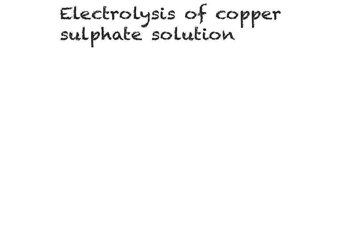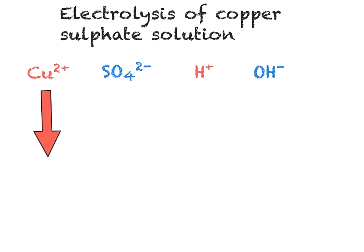In the electrolysis of copper sulfate solution, we have two different compounds: copper sulfate, CuSO₄, as well as water, H₂O. These two compounds under electrolysis will split into their respective ions. We will have Cu²⁺ as the cation from the copper sulfate, and SO₄²⁻ as the anion, the sulfate ion. From water we have the H⁺ ion and the OH⁻ ion. As copper is less reactive than hydrogen, it will be the copper that is evolved at the cathode. The copper ions will move towards the cathode to become copper solid. The half equation is: Cu²⁺ + 2e⁻ → Cu. It is a gain in electrons, so it is a reduction.